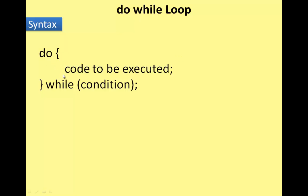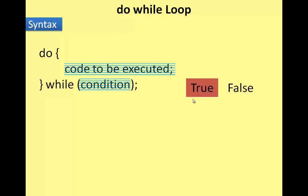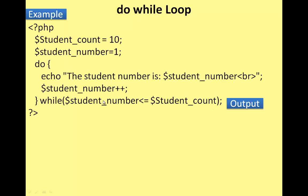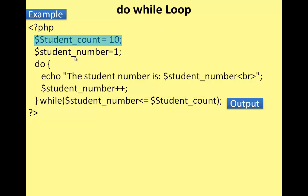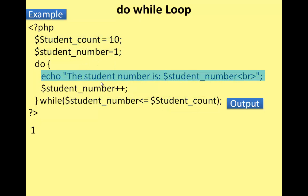Do-while syntax: do — code executes first — then while condition is checked. If the condition is true, the loop repeats. If false, the loop ends. Example using PHP code: variables declared, HTML tag used, this is the loop body, this is the condition. Student count is 10, student number is 1 — the loop body executes first.